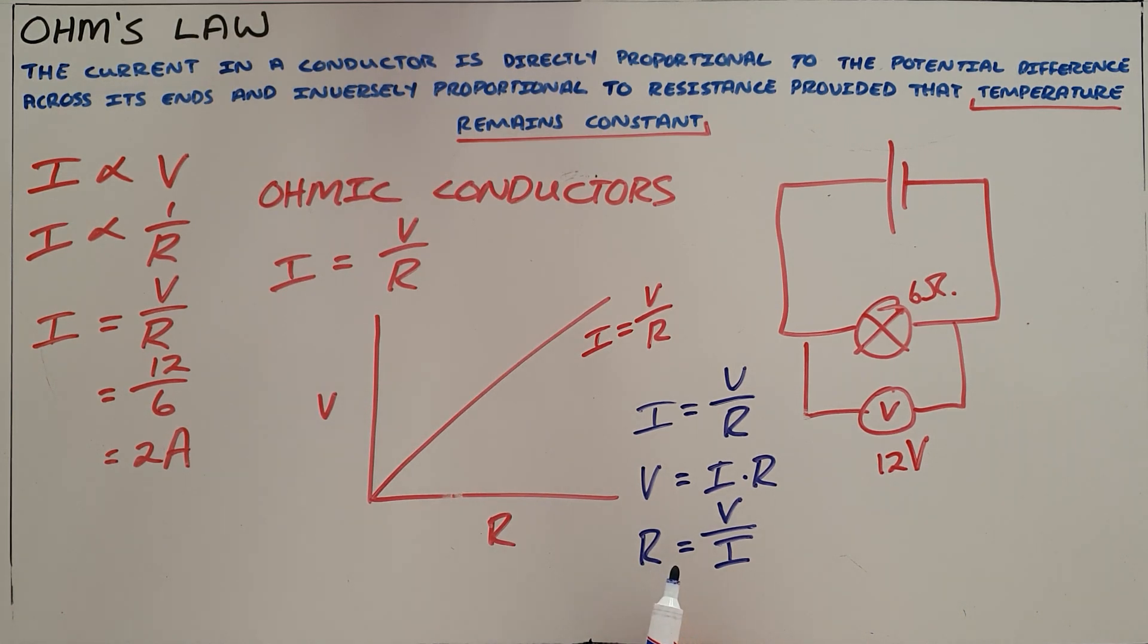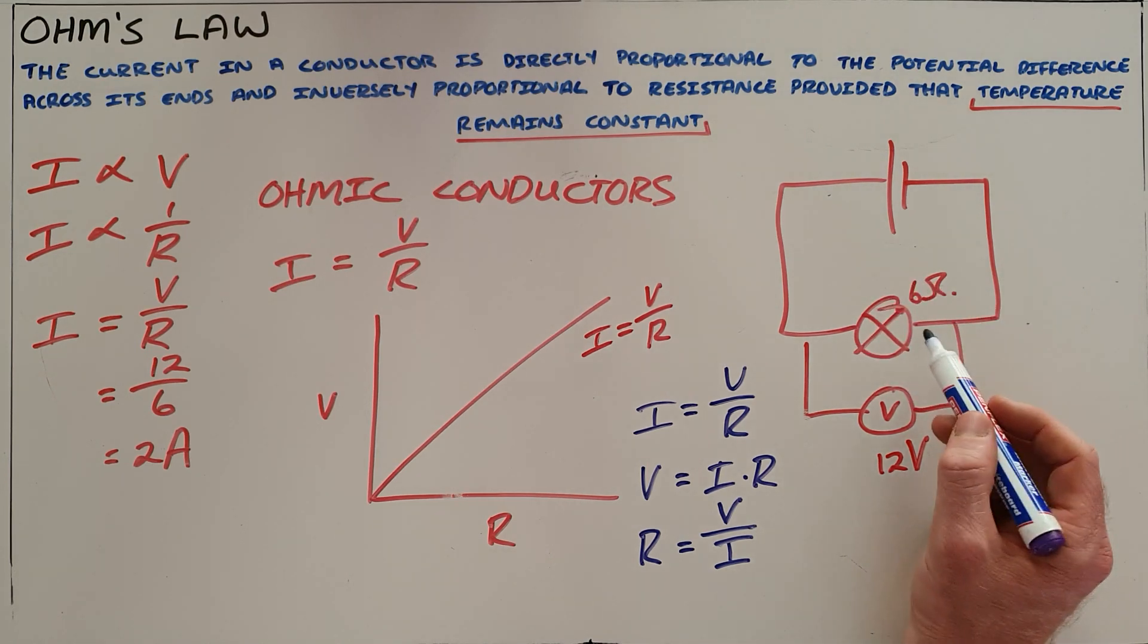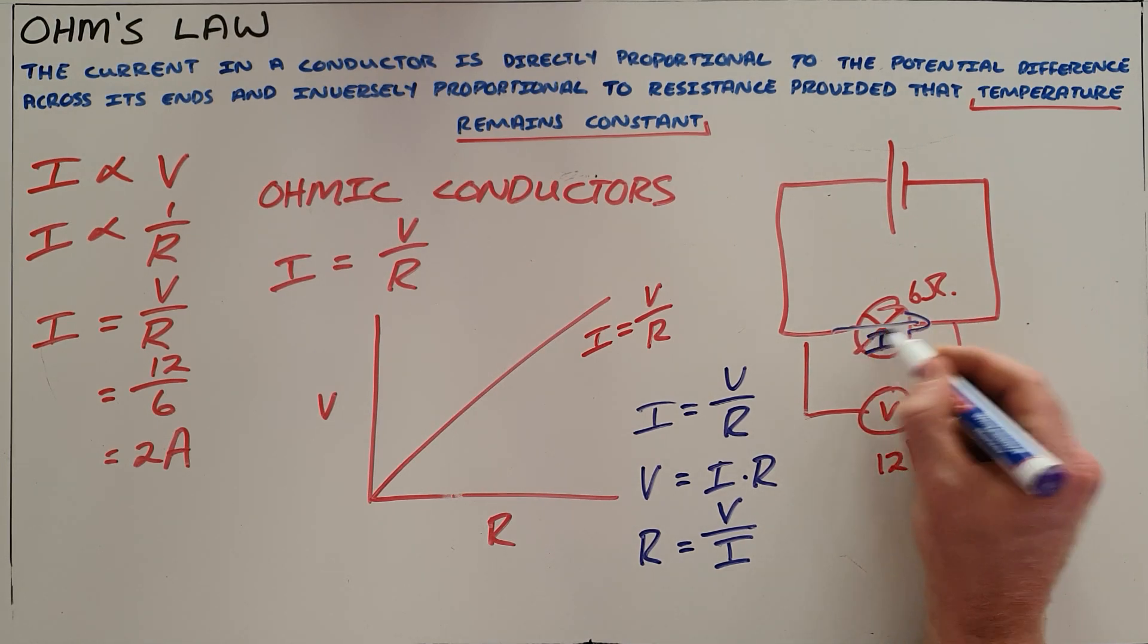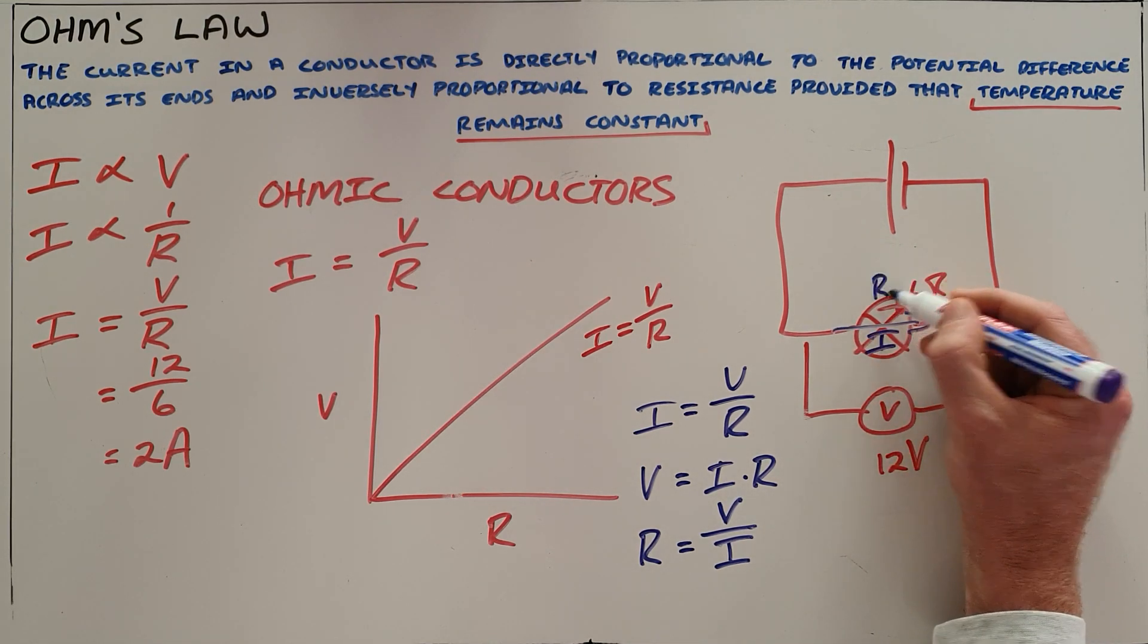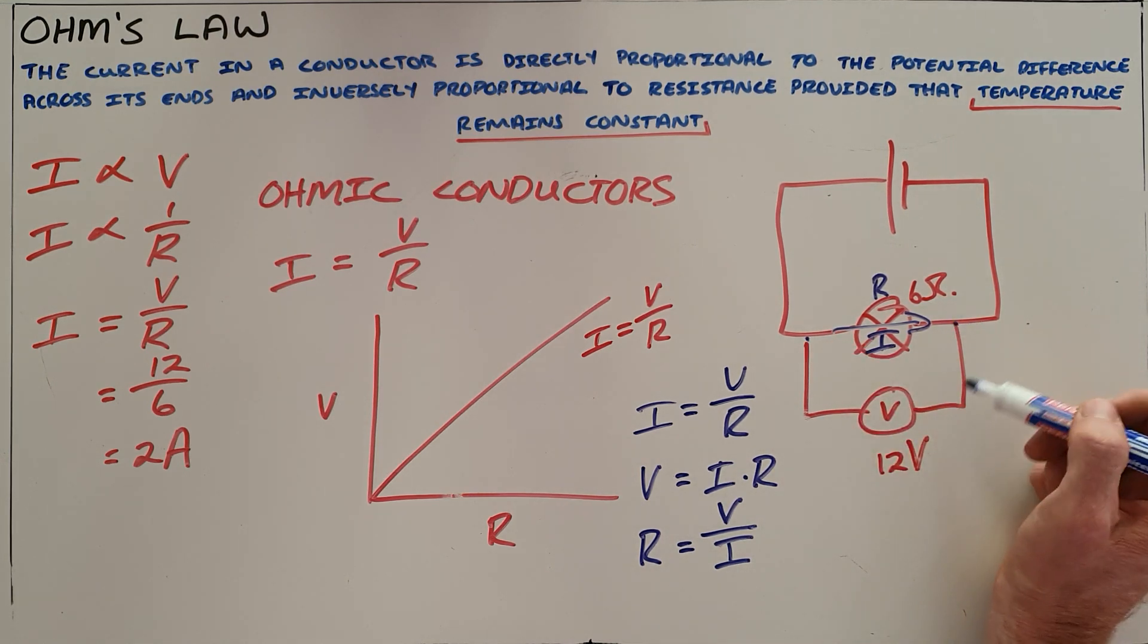Very important to remember that Ohm's law applies for a specific conductor. So when we are speaking about this conductor, we are talking about the current that is passing through that conductor only, the resistance of that conductor, and the voltage measured over that conductor. It is not the entire circuit's voltage.